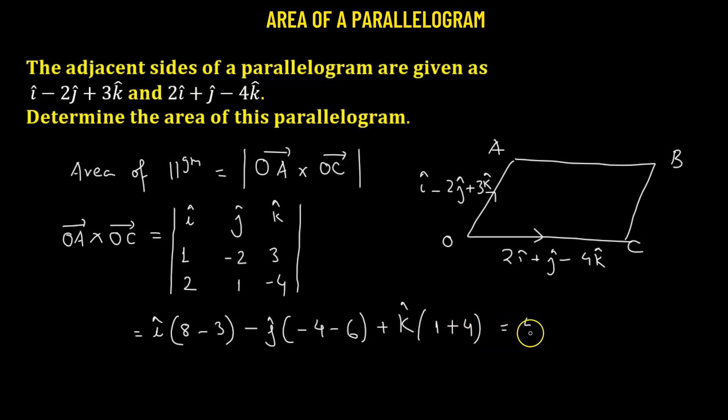So when we solve this, we get 5i cap plus 10j cap plus 5k cap. So we have the vector OA vector cross OC vector.